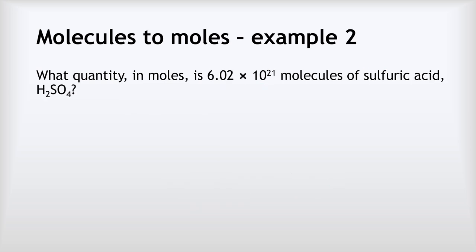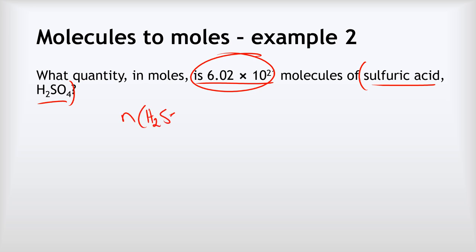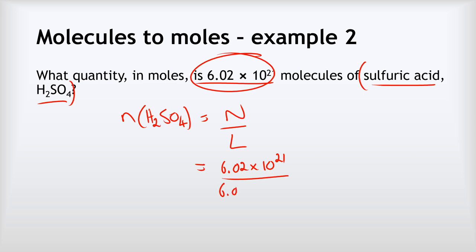Example 2: What quantity in moles is 6.02 × 10²¹ molecules of sulfuric acid H₂SO₄? The formula is irrelevant; only the number of molecules matters. n(H₂SO₄) = 6.02 × 10²¹ ÷ 6.02 × 10²³ = 0.01 moles.